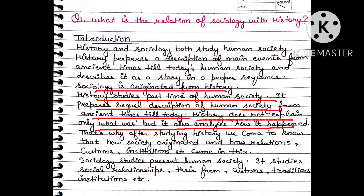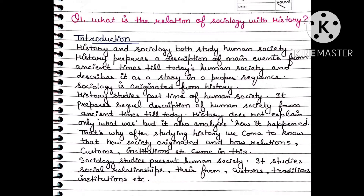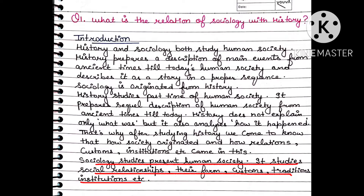We study in history the events and reasons responsible for those events in human society. After studying history, we come to know how society originated — its relations, customs, traditions, institutions, and groups. Sociology, on the other hand, focuses on today's present human society, including social relationships in their forms, customs, traditions, and institutions. So history basically focuses on past society and sociology focuses on present society.